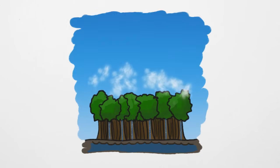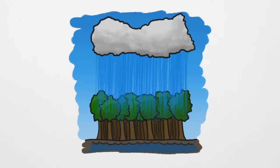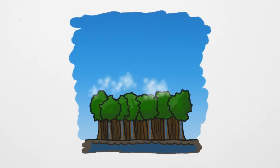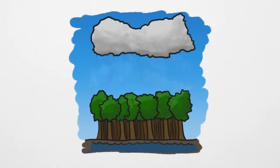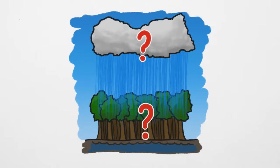Without the forest pumping so much water into the air, rainforests wouldn't be as rainy. And without so much rain, the forest couldn't pump so much water into the air. So which came first, the rain or the rainforest?